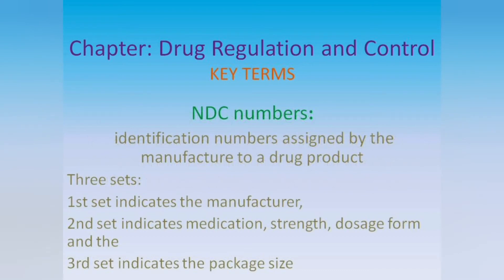NDC Numbers: identification numbers assigned by the manufacturer to a drug product. They are made up of three sets. The first set indicates the manufacturer. The second set indicates medication, strength, and dosage form. The third set indicates the package size.